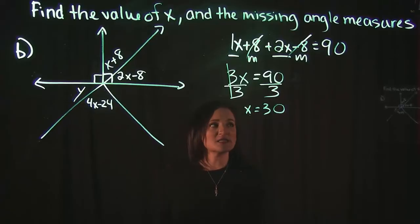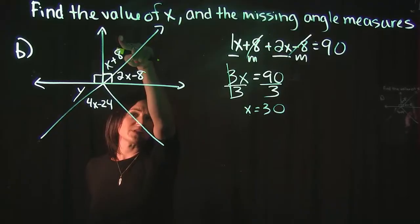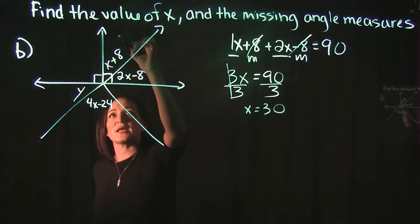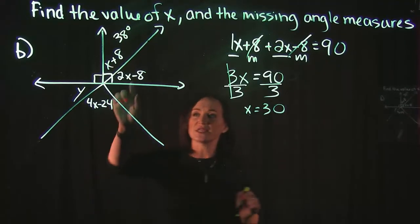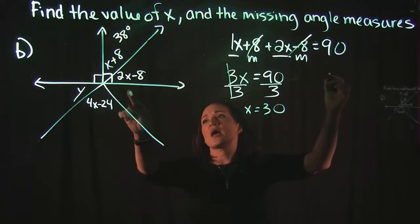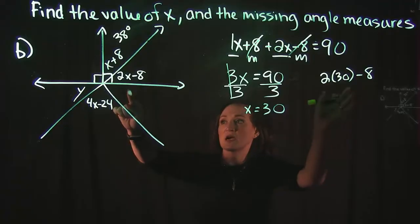And since x is equal to 30 degrees, we can use that here. This one angle is x plus 8. If x is equal to 30, that means we have 30 plus 8. So this one has to be 38 degrees. This angle here is 2x minus 8. So 2x minus 8, if we plug in a 30 for the x there...